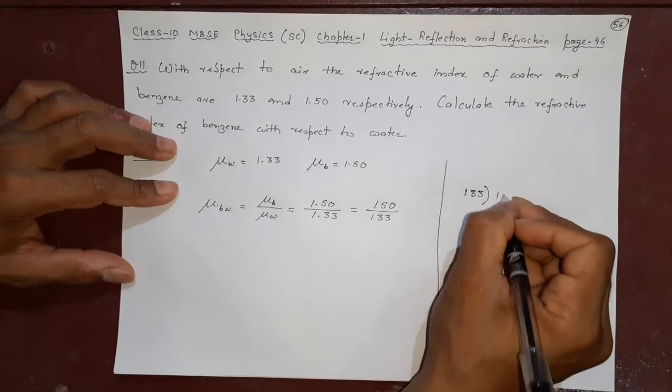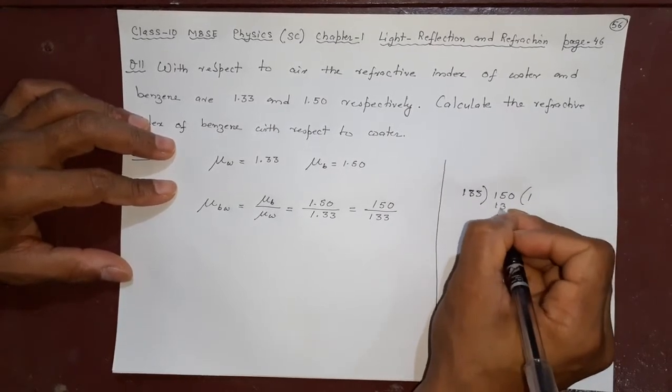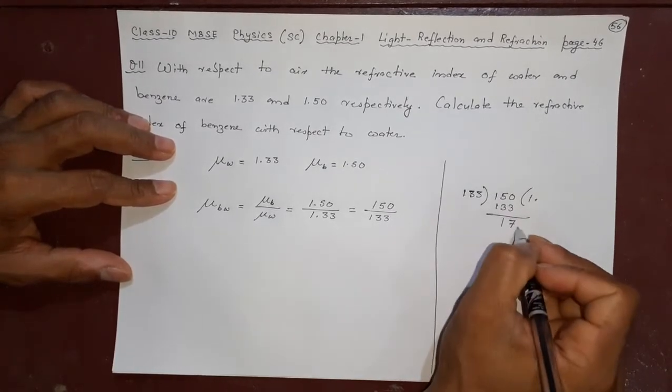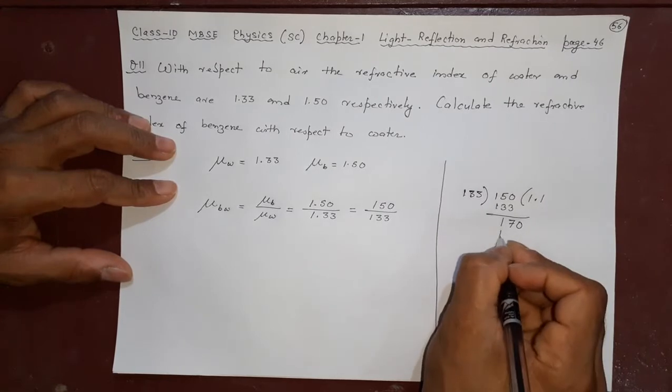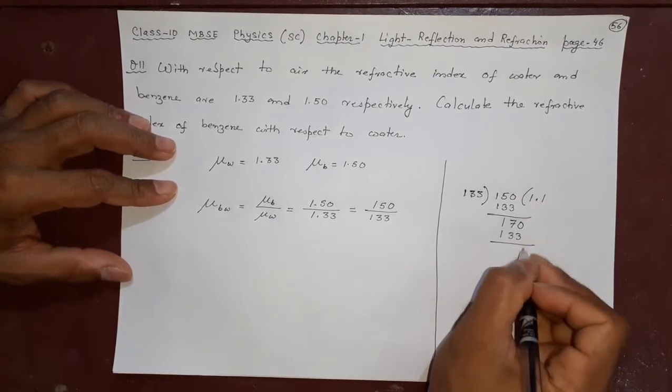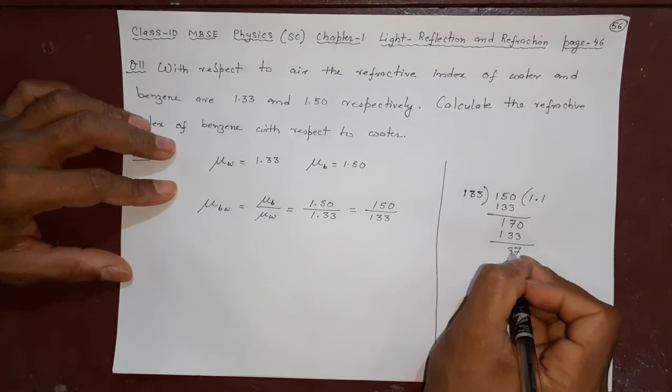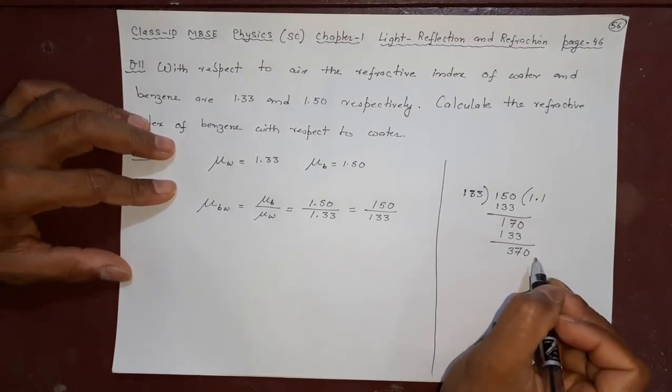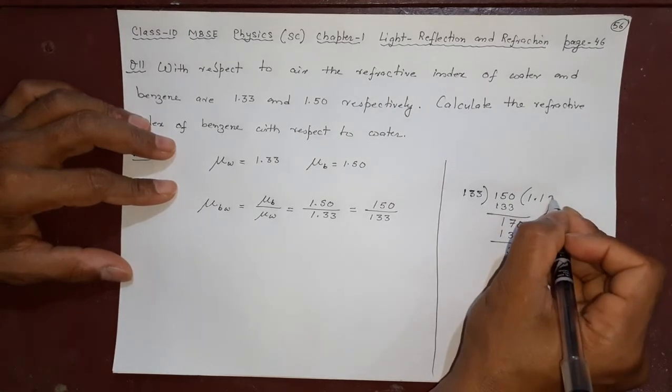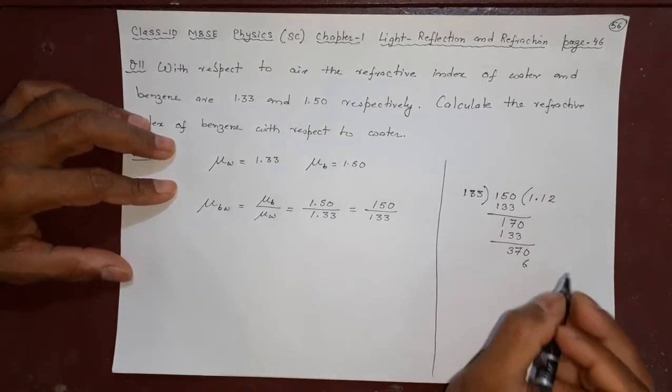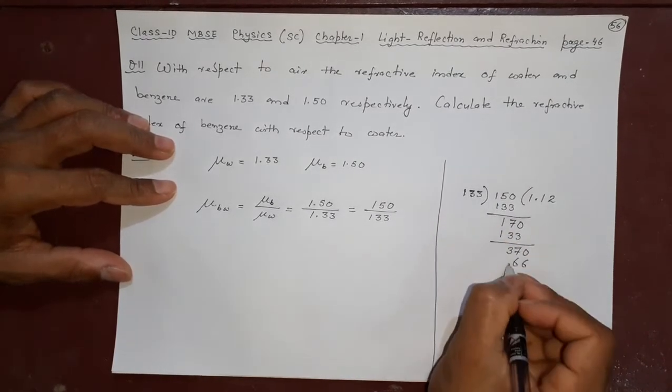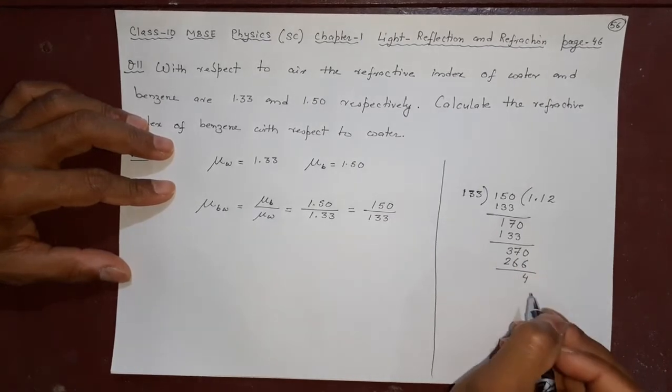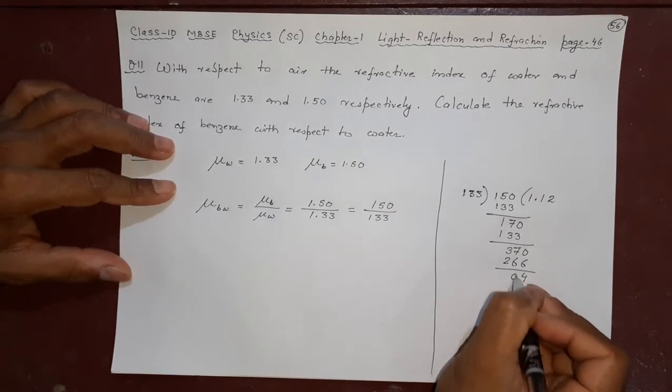1.33 divides into 1.50 one time. 1.33, remainder 17. Bring down zero, 170. 133 goes in once, remainder 37. Add zero, 370. 133 goes in twice: 2 times 133 is 266, leaving remainder 104.